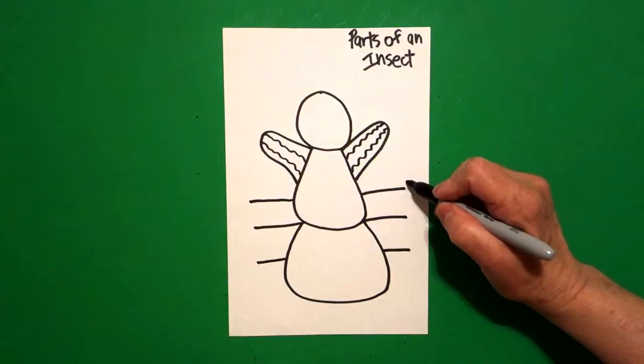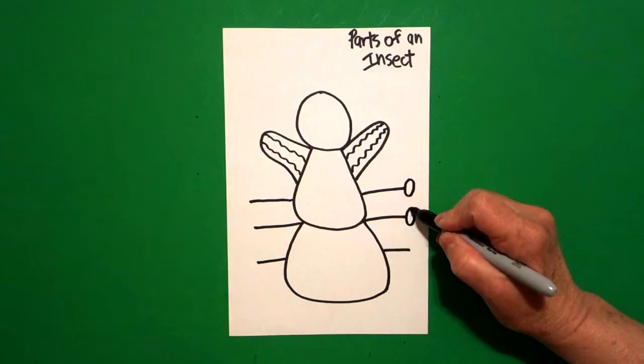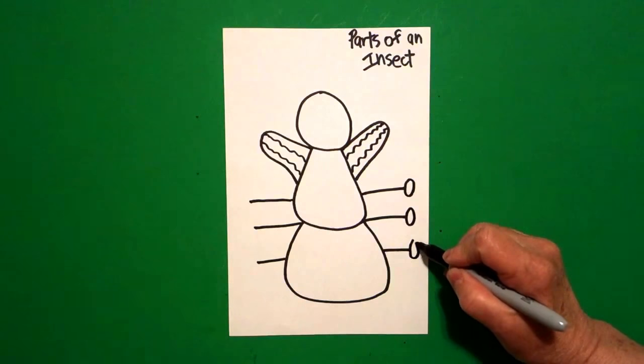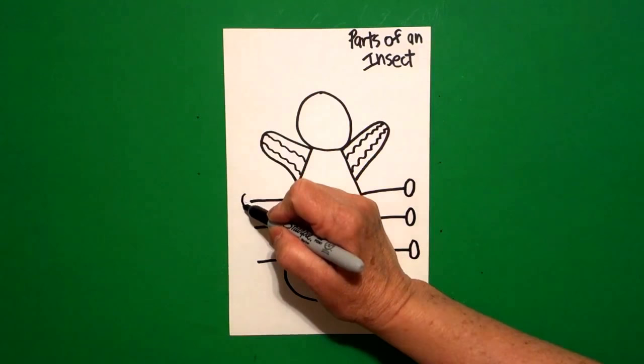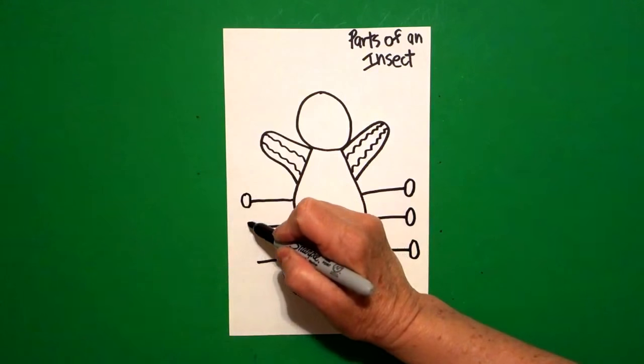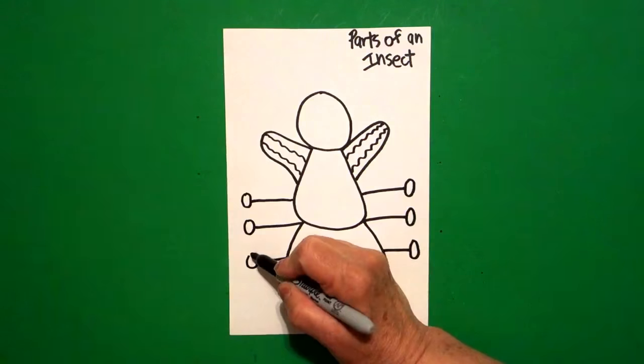I come back to the right and I draw a flat oval, two, three. I jump over on the left and I draw them again. One, two, three.